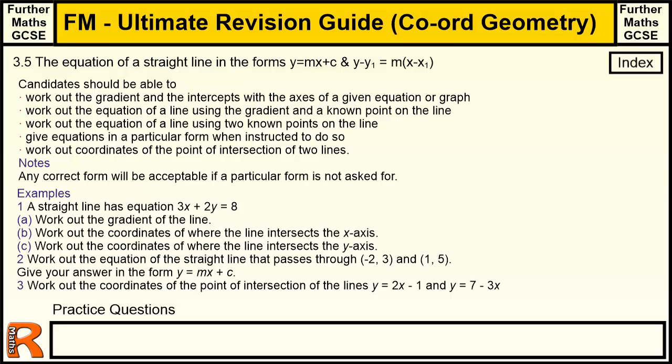3.5, the equation of a straight line in the forms y equals mx plus c, and y minus y1 equals m(x minus x1). This is part of my ultimate revision guide to Further Maths GCSE, the coordinate geometry section. This button here will take you back to the index of coordinate geometry, and any exam questions I've done on this topic I will put links to down here in the practice questions section.